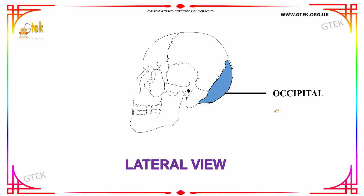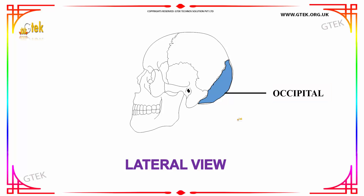Next we have the occipital bone, which is shown in the lateral view of a human skull. As you can see, the occipital bone is located on the hind side of the skull.